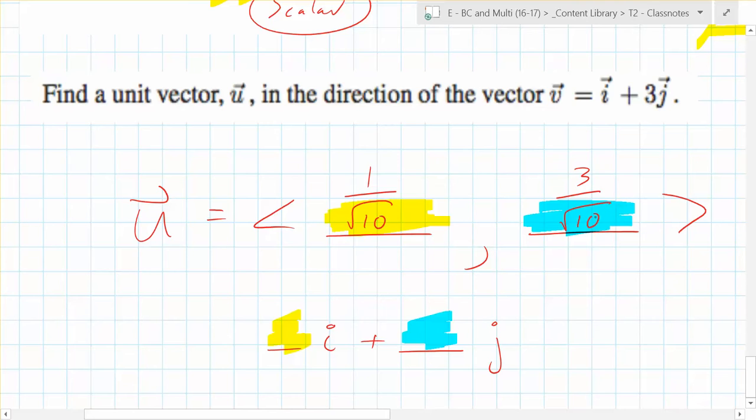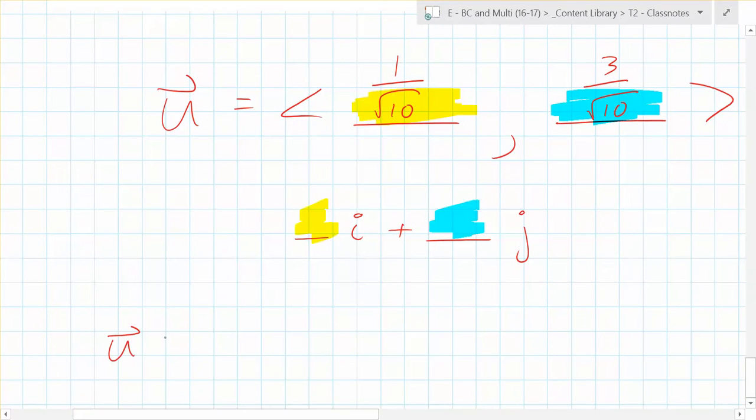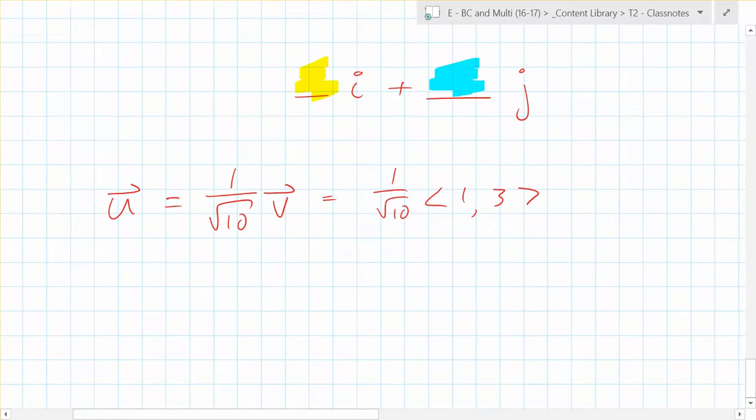So what are you doing? You know that vector u is one over root 10 times vector v. By multiplying by a scalar, did we change the direction? No, we just changed the magnitude. Let's verify that. That means it's one over root 10 times vector v, which was [1, 3]. So what do you have here? [1 over root 10, 3 over root 10].